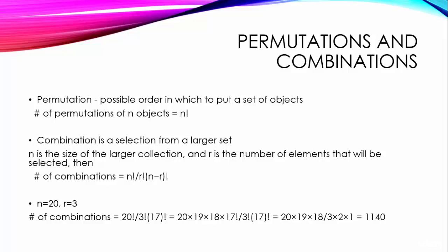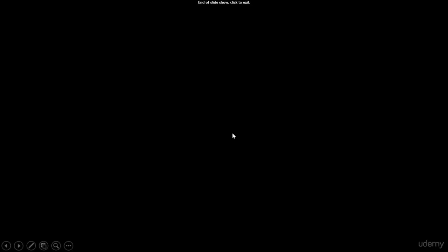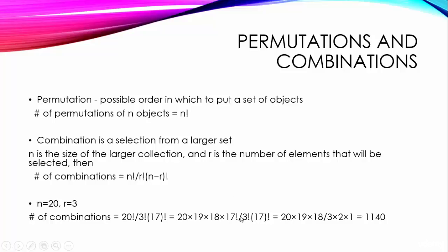So the number of combinations would be 20 into 19 into 18 into 17 factorial by 3 factorial into 17 factorial is equal to 20 into 19 into 18 by 3 into 2 into 1, which is equal to 1140.